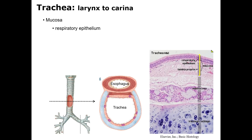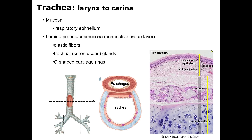In the respiratory system, the mucosa or mucosal layer consists of two sub-layers: the epithelium and the lamina propria directly beneath it. In the trachea, the epithelium consists of pseudostratified ciliated columnar epithelium, or respiratory epithelium. The connective tissue underlying the epithelium of the respiratory, digestive, and urinary systems is called the lamina propria. The lamina propria and the next layer called the submucosa contain elastic fibers, special seromucous glands, and C-shaped cartilage rings. The outermost layer is the tunica adventitia, which is a connective tissue layer.